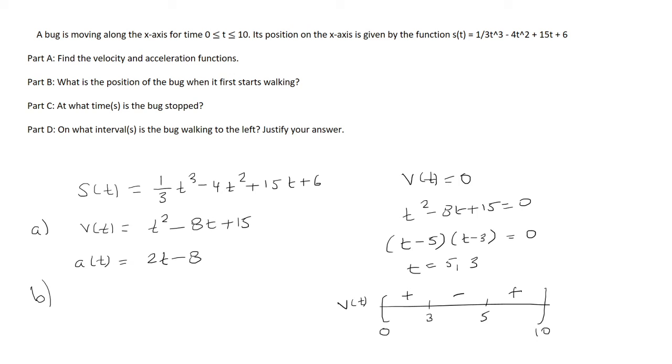Okay, part B asks, what is the position of the bug when it first starts walking? The position, basically it's asking for the position at time 0 because that's when it starts walking. The velocity is positive, so that means the bug is moving in the right direction.